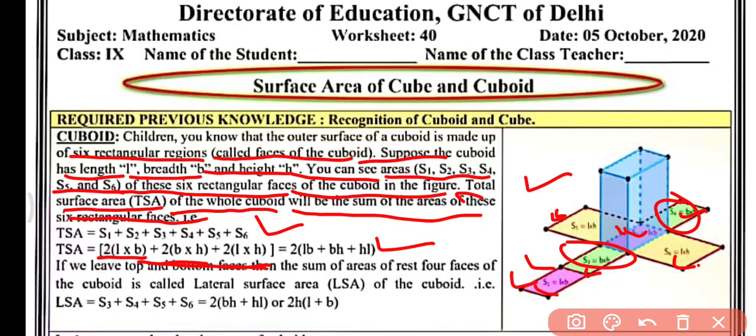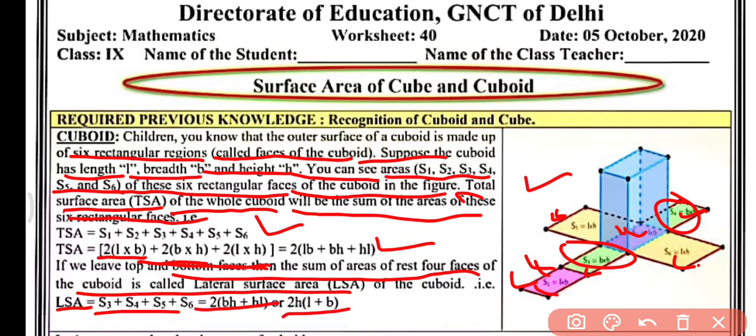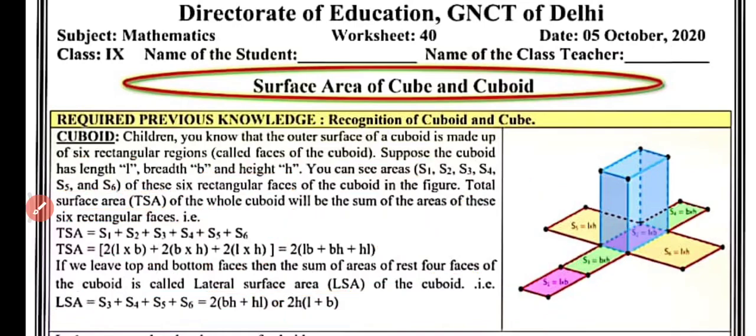If we leave out the top and bottom faces, the sum of areas of the remaining four faces of the cuboid is called the lateral surface area (LSA), also known as the curved surface area. Think of it like finding the area of four walls of a room — leaving out the ceiling and floor. The lateral surface area equals 2(bh + hl), or rewritten as 2(l + b) × h. This is the area of four walls of the cuboid.